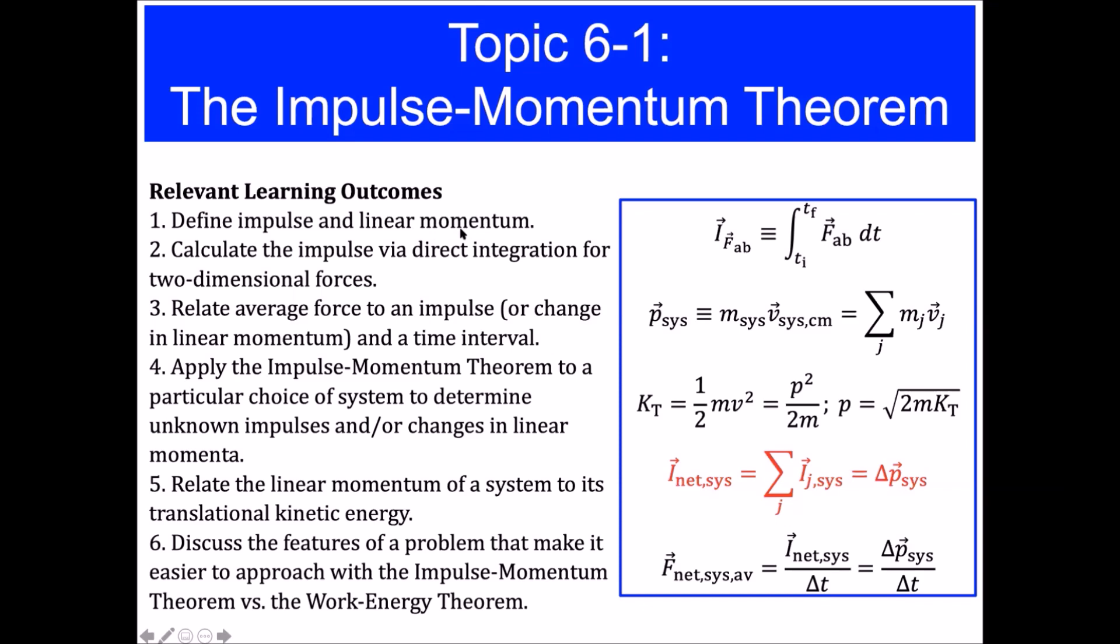Related to that is something called the linear momentum of the system. The linear momentum is a vector described by P, and the linear momentum of the system is equal to the mass of the system times the velocity of the system's center of mass. And if we have a system that's composed of a number of different objects, we can find the total linear momentum of that system of objects by multiplying the mass of each object by each object's velocity, then adding those mass times velocity terms together for each of the objects that make up the system.